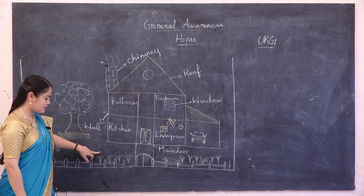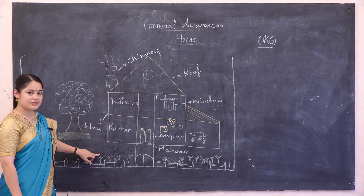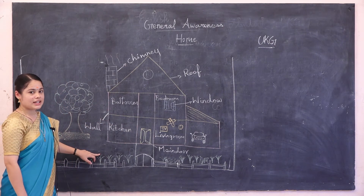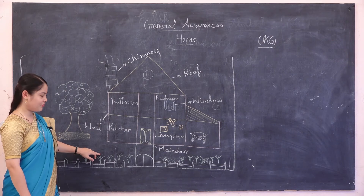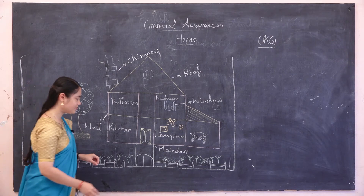Grass. Grass. Grass is green in colour. Very good.